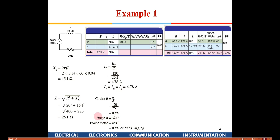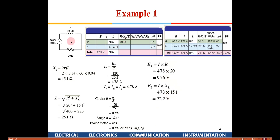The applied voltage of 120 V and the current will not be in sync — there will be some phase lag. Using cos(theta) = R/Z = 20/25.1, we get theta = 31.7 degrees, which is the angle by which the current lags the applied voltage. The power factor is cos(theta) = 0.797. The voltage across the resistance is I×R = 95.6 V, and voltage across the inductor is 72.2 V. These two voltages are out of phase by 90 degrees, and their vector sum gives the total applied voltage of 120 V.